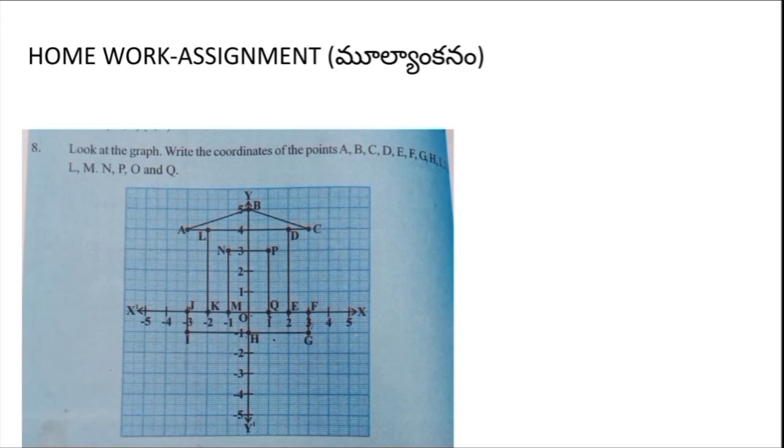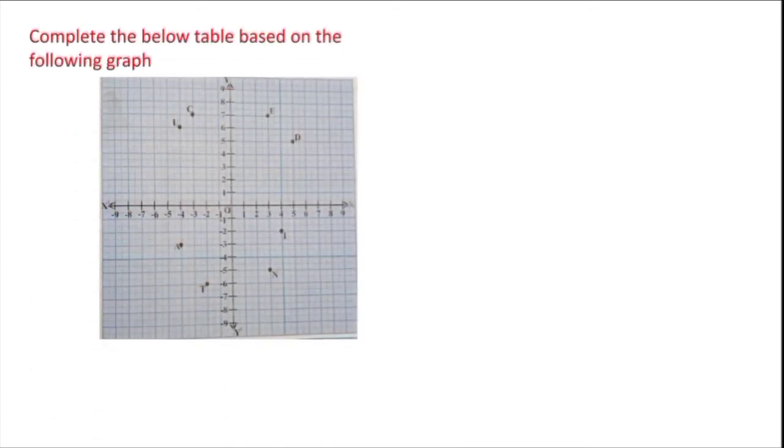Now coming to homework assignment. Dear children, look at the graph. Write the coordinates of points A, B, C, D, E, F, G, H, I, J, K, L, M, N, O, P, Q.